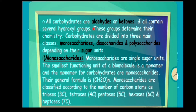All carbohydrates are either aldehydes or ketones. For example, aldehyde has the chemical formula CHO, and ketone has the formula C=O. In all cases, carbohydrates contain several hydroxyl groups. These groups determine their chemistry.